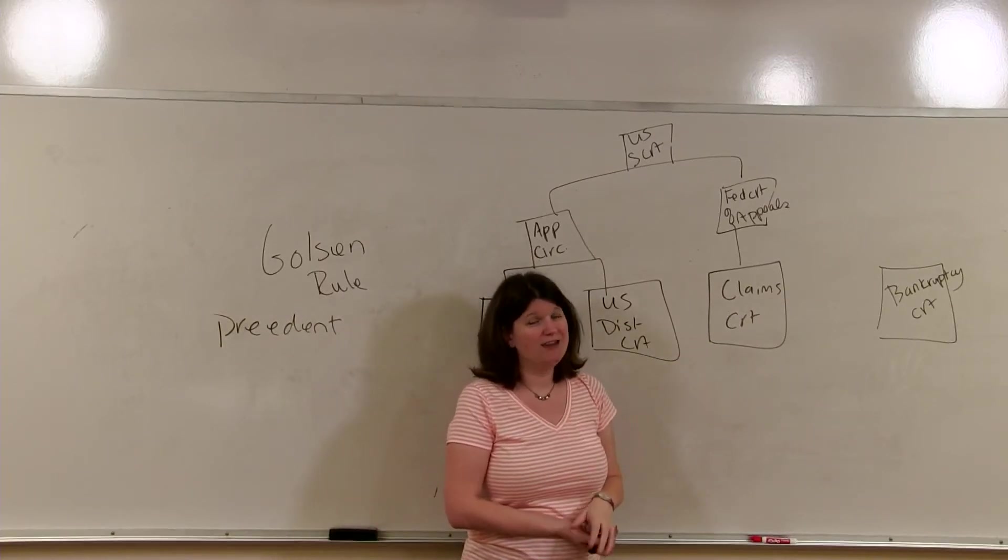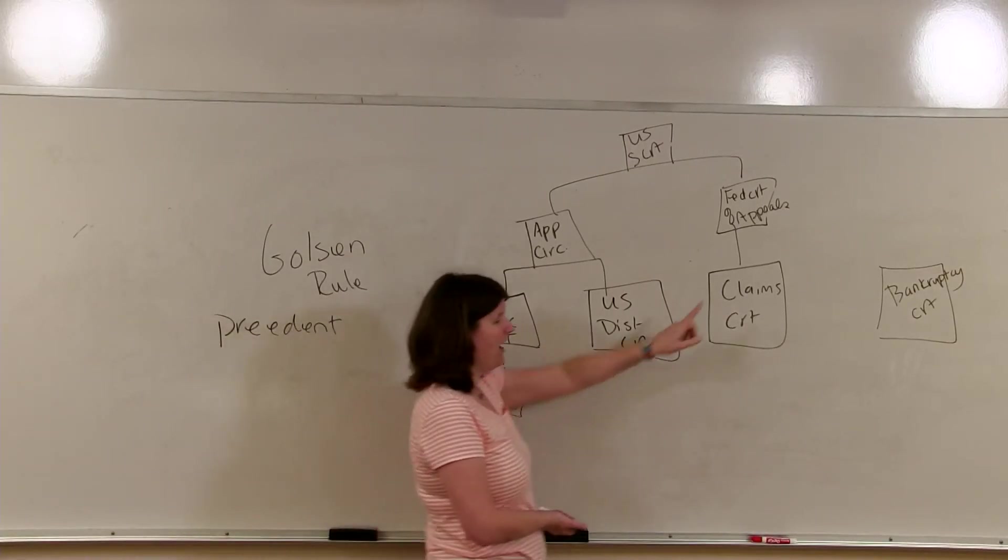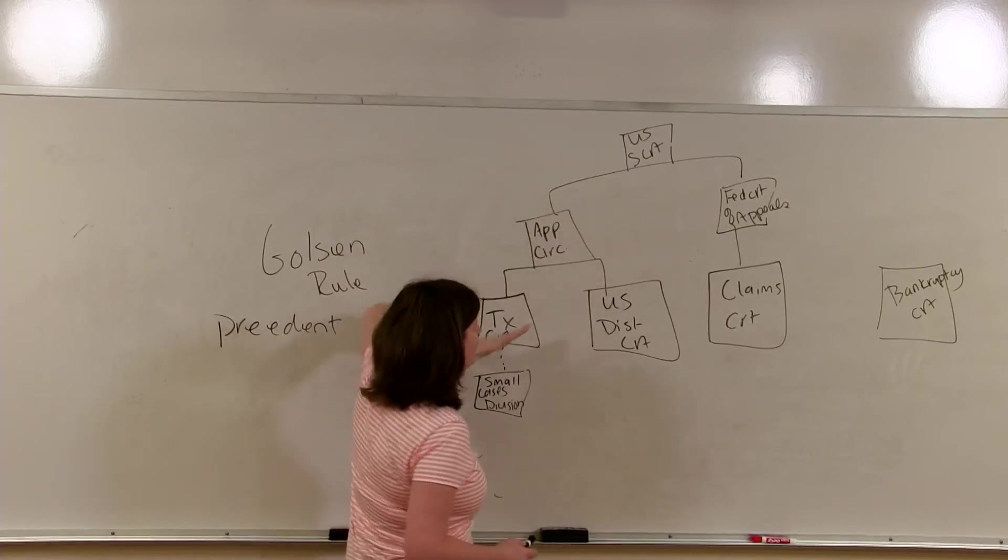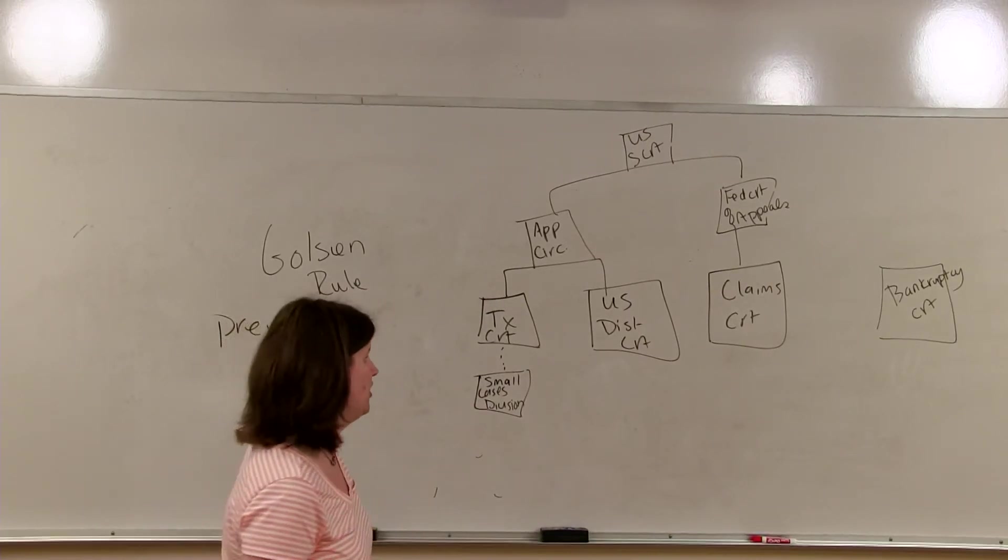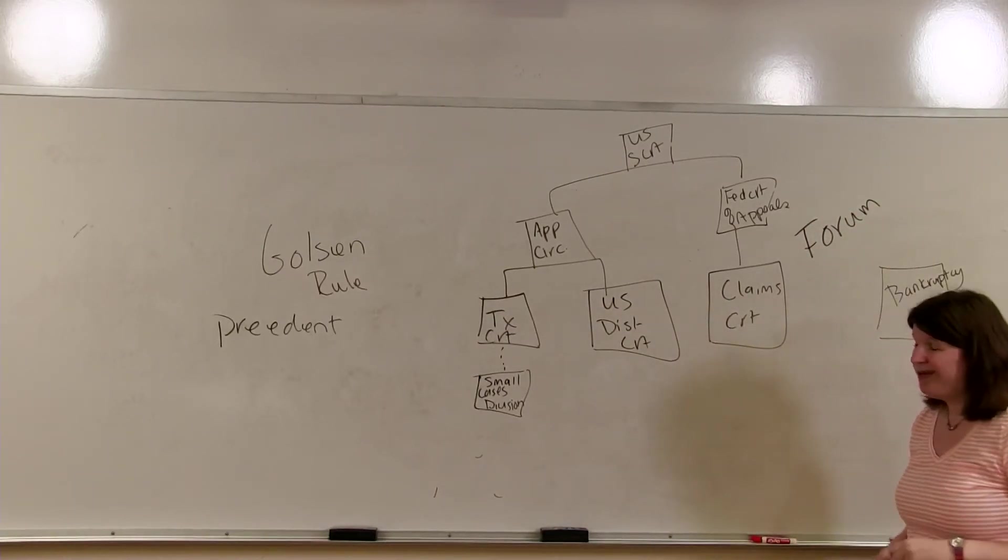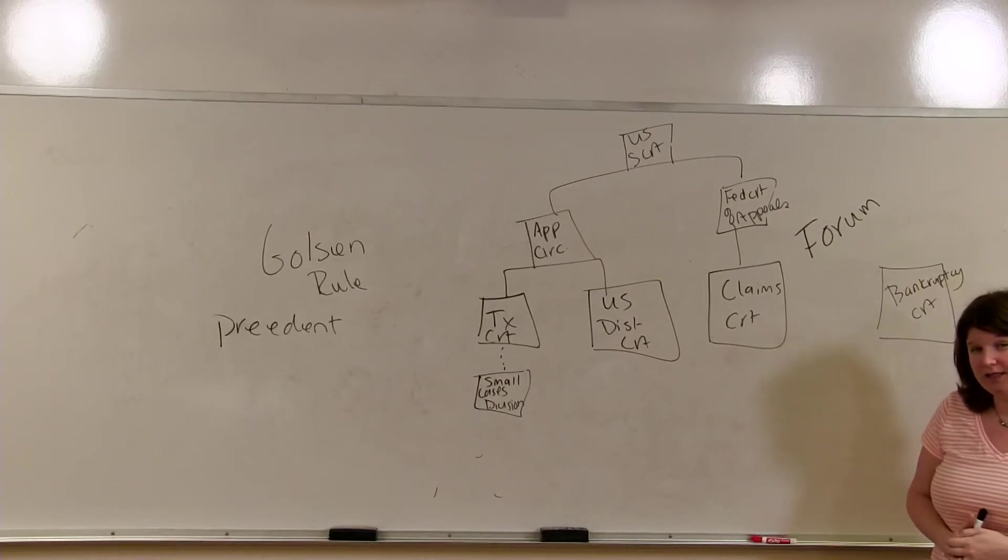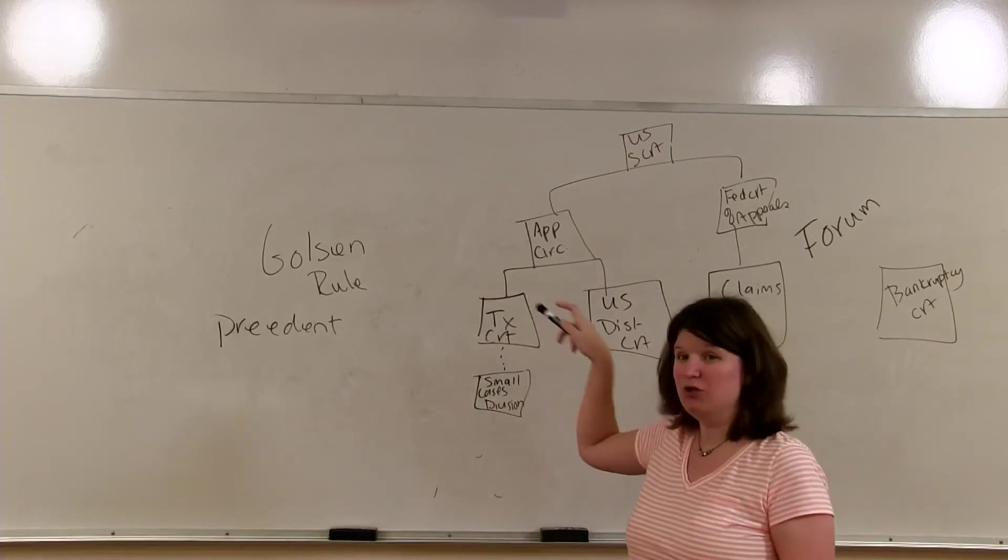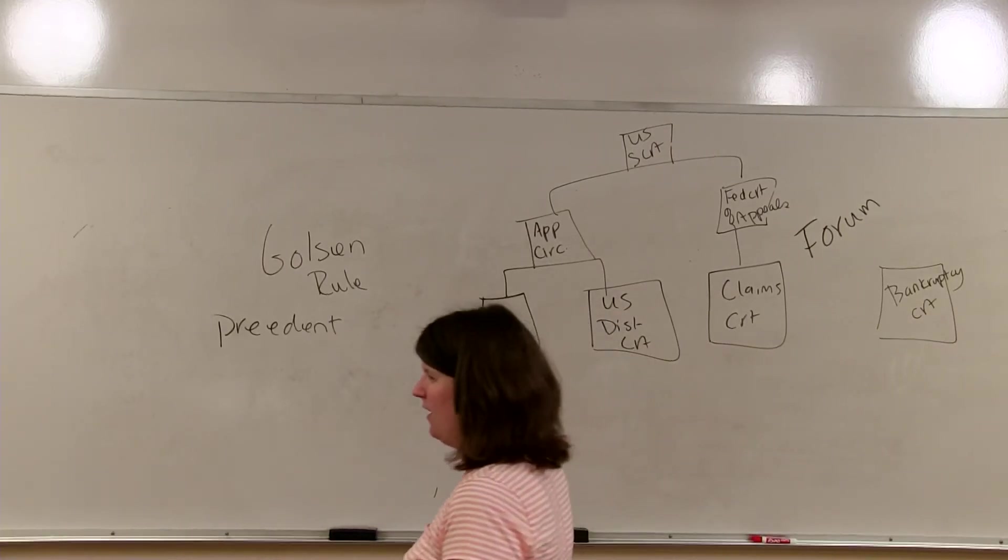What about the claims court? Now, the claims court does not have the Golson rule. Why is that? Because the claims court has their own appellate court that they appeal to. They don't care about any of this over here. Sometimes, attorneys use that to their advantage. It's called forum shopping. It means if a taxpayer doesn't like the result that's in their appellate circuit, but the Court of Federal Claims has a rule on it, they will go to the Court of Federal Claims. Because the Court of Federal Claims doesn't have to adhere to the Golson rule. They can do whatever they want.